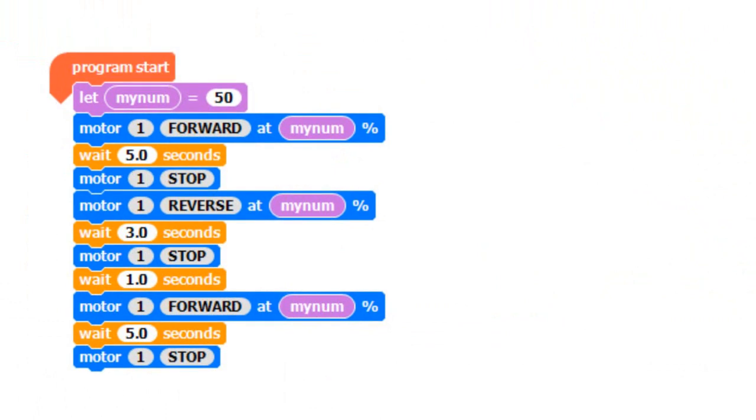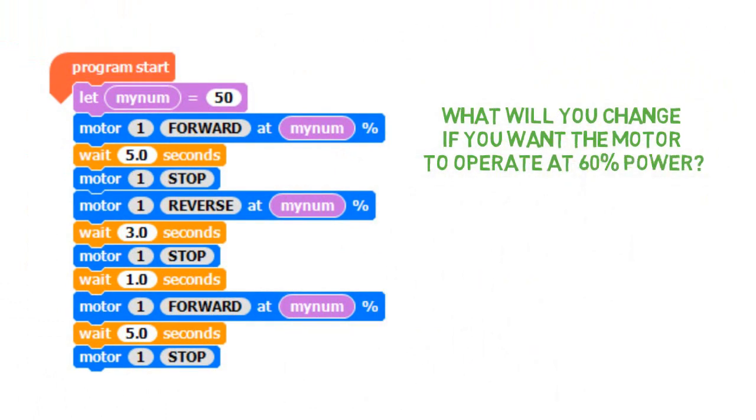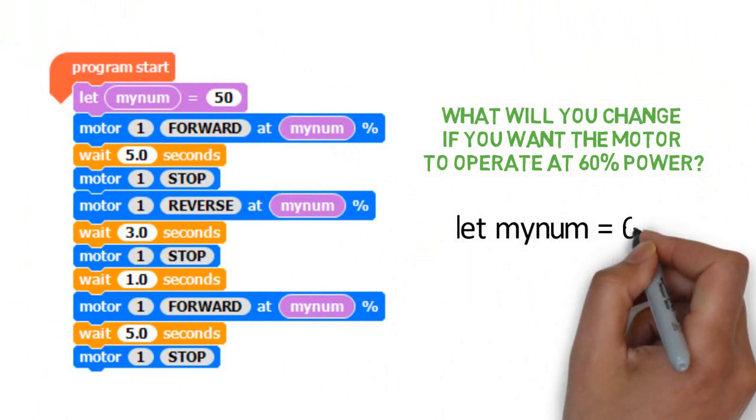Have a look at this new crumble example. What will you change if you want the motor to operate at 60% power? Well done, let my num equal 60.